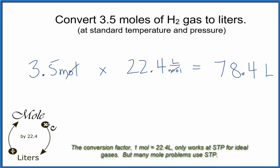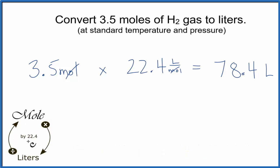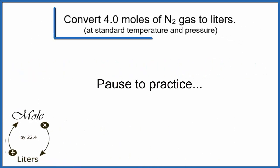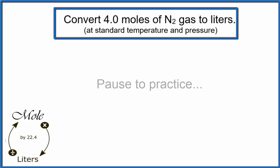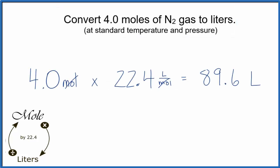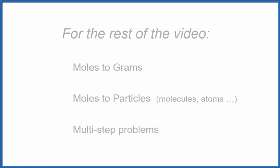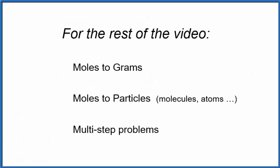And moles do cancel out, so we're left with liters. So to go from moles to liters, we multiplied by 22.4. If we had liters and we wanted to go to moles, we would divide by 22.4. Okay, now you try one. Okay, so now you're a pro at liters to mole conversions.